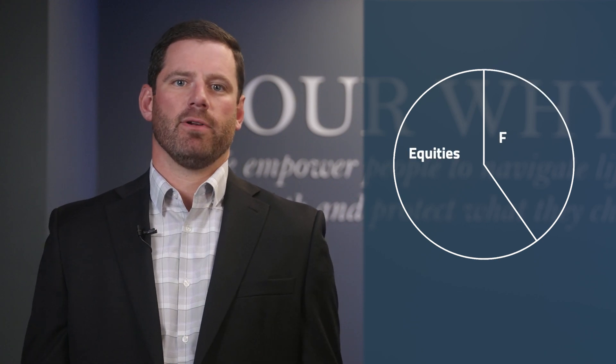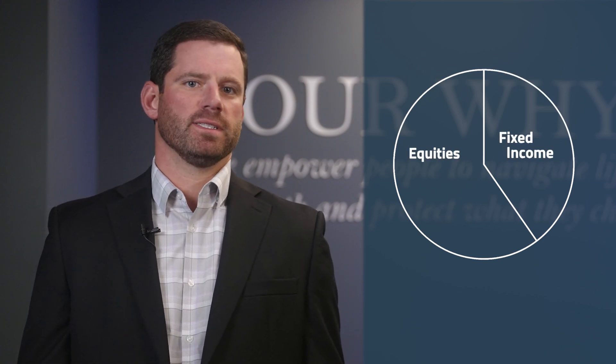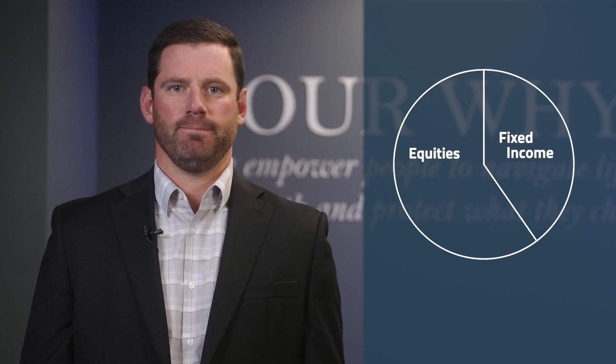So in your overall portfolio, you might have 60% equities and 40% fixed income. Your target allocation can be adjusted based on life events or personal changes, but for this discussion, let's assume it remains constant.